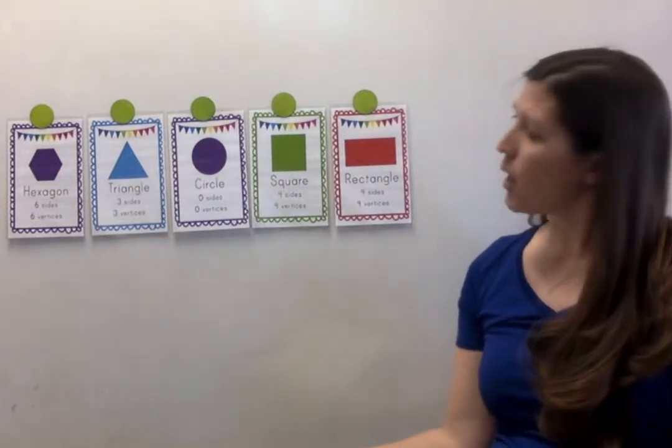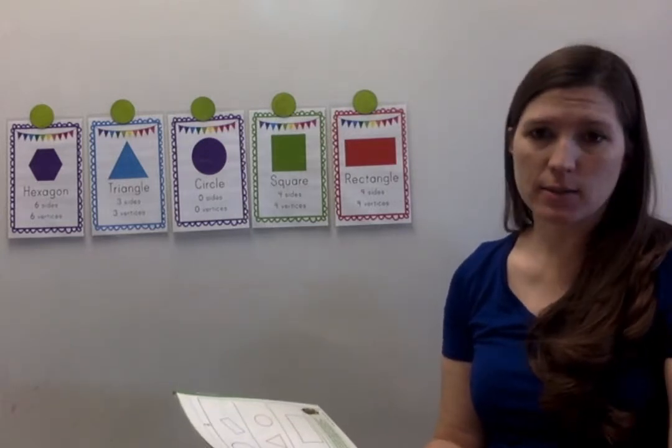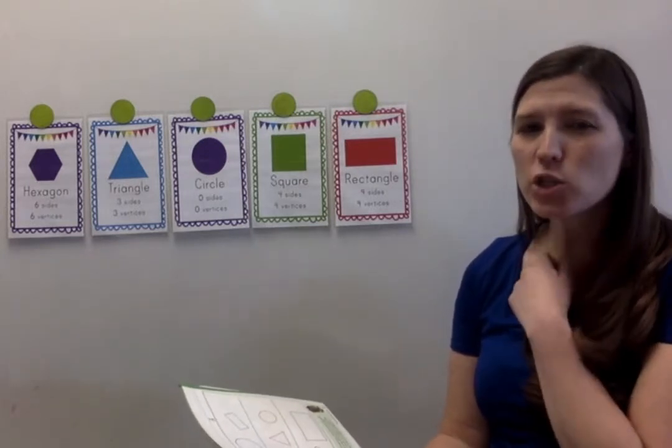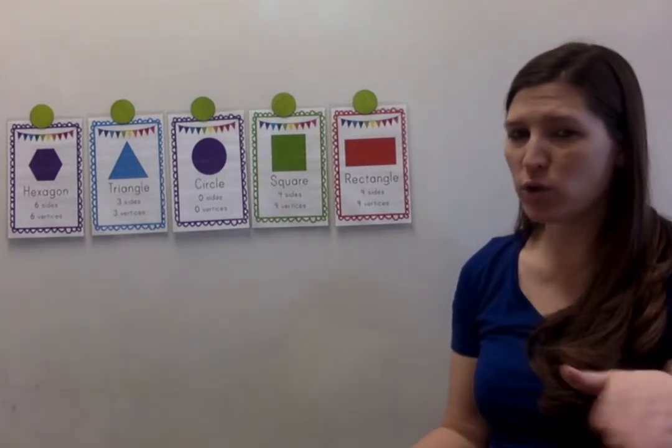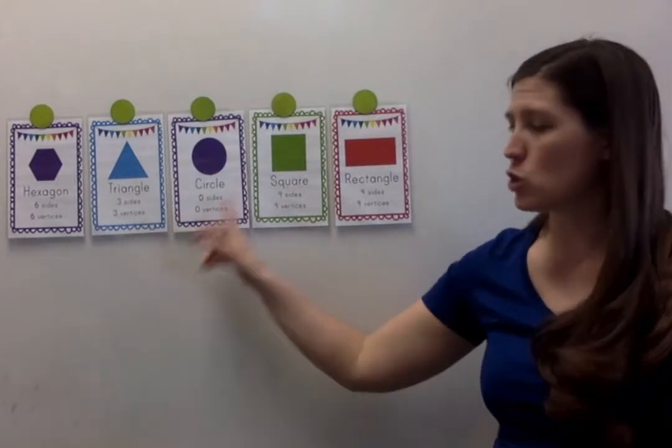Here's another one. I'm thinking of a shape that has no vertices. Which shape has no vertices? The vertices are the corners. Which shape has no vertices? Circle.